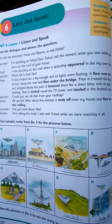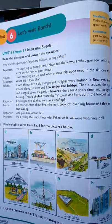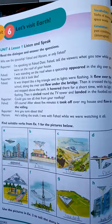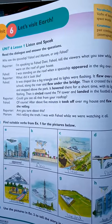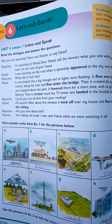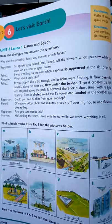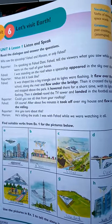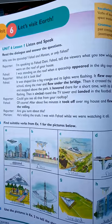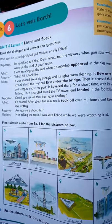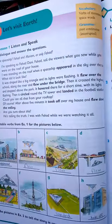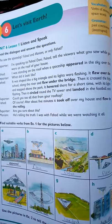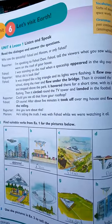It crossed the highway and stopped above the park, hovering there for a short time with its lights flashing continuously. Then it circled around the TV tower and landed in the football stadium. The reporter asked could he see all that from his rooftop. Pahad said of course — after about five minutes it took off over his house and flew down to the valley. The reporter asked if he was sure, and Mariam replied he is telling the truth — she was with Pahad while they were watching it all.